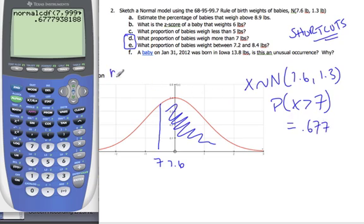So, what the notation is, it's normal CDF. It's your left bound, right bound, comma, mean, comma, standard deviation.